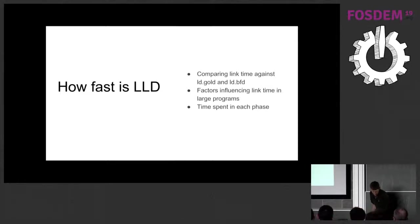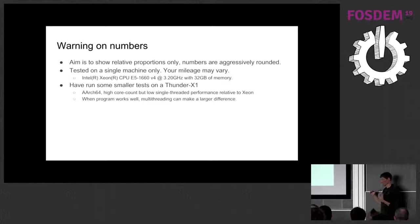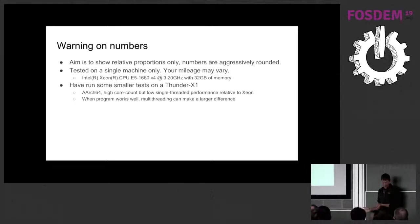Now, a bit of a warning on the numbers. The differences between my actual measurements are quite large, so I haven't done a huge in-depth benchmarking study with scientific conditions — but the differences are sufficiently high that machine jitter and variance won't be that significant. The machine I ran most benchmarks on is a fairly fast machine with a lot of memory. Your mileage will obviously vary if you have smaller machines, lower core count, or lower memory. I have done some tests on a ThunderX1 AArch64 machine with quite low single-thread performance but many cores, and I see similar or larger differences.